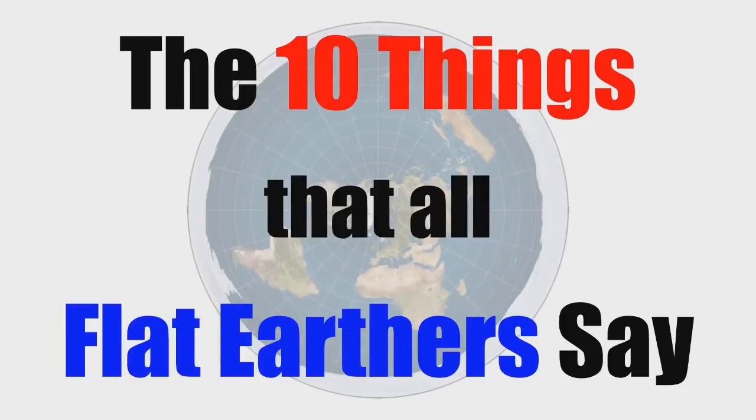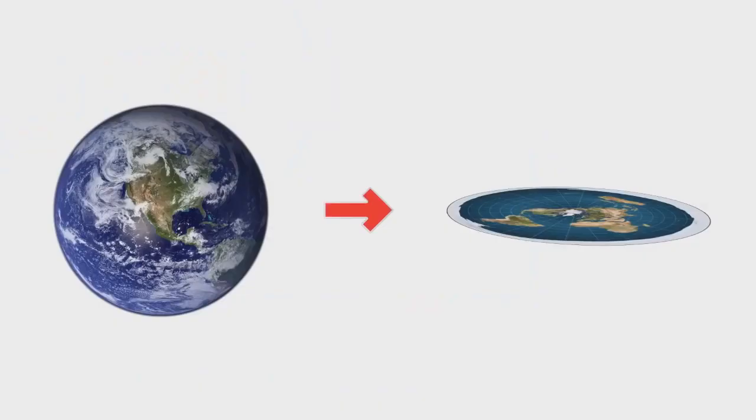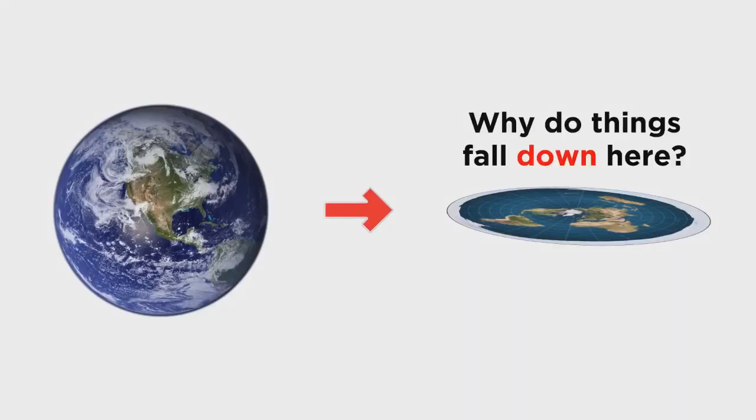The 10 things that all flat earthers say. Number one, one extremely problematic side effect of taking the globe and flattening it out into a plane is that gravity makes no sense and there is no reason for things to fall to the ground.